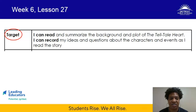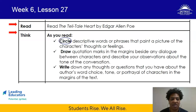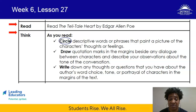Our learning targets for today have shifted. I can read and summarize the background and plot of The Telltale Heart. I can record my ideas and questions about the characters and events as I read the story. Your annotations are going to take a little bit of a different angle. Remember, we do our read, think, talk, write routine here, and you close with a wrap-up activity. You're going to read The Telltale Heart more closely this time, circling descriptive words or phrases that paint a picture of characters' thoughts or feelings, drawing quotation marks in the margins beside any dialogue, and writing down any thoughts or questions about the author's word choice, tone, etc.